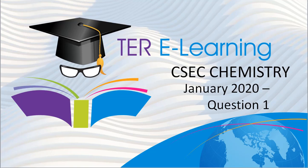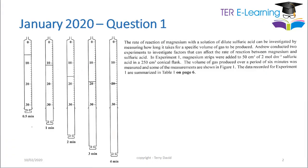Hi, it's Terry here again. Today I'm going to be looking at the January 2020 CSEC Chemistry paper, Question 1. The rate of reaction of magnesium with a solution of dilute sulfuric acid can be investigated by measuring how long it takes for a specific volume of gas to be produced. Andrew conducted two experiments to investigate the factors that can affect the rate of reaction. In experiment one, magnesium strips were added to 50 cm³ of a 2 mol/dm³ sulfuric acid.